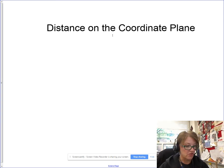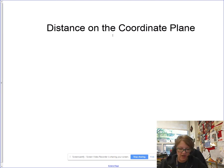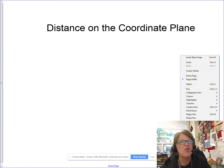All righty, we're venturing into more use of the Pythagorean theorem, and one of the more practical applications of this is figuring out what distance is on the coordinate plane. The nice thing about the coordinate plane is we get this grid. Everything's perpendicular, it lends itself to make perfect right triangles all over the place.